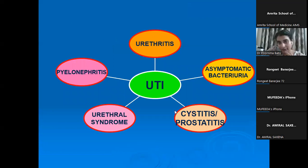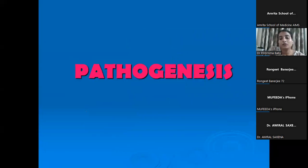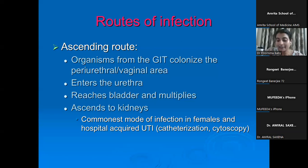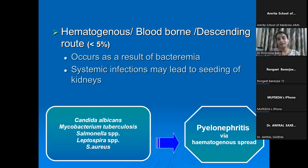This is the spectrum of clinical manifestations in UTI — it can be a simple urethritis, asymptomatic bacteriuria, cystitis, prostatitis, urethral syndrome, or it can go right up to a pyelonephritis picture. The ascending route is the commonest mode of infection in females — organisms from the GIT colonize the periurethral or vaginal area, enter the urethra, reach the bladder, and multiply — because of the shorter length of the urethra and close proximity to the rectal area.